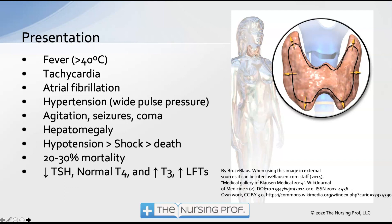On labs, we would expect to see a decrease in thyroid stimulating hormone, as the pituitary is signaling via negative feedback to reduce output. T4 may be normal because T4 goes into storage rather than being mobilized. T3 is the mobilized thyroid hormone circulating in the bloodstream and is likely to be elevated. In addition, we may also see an increase in liver function tests.